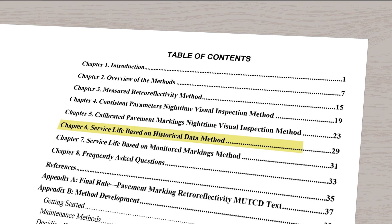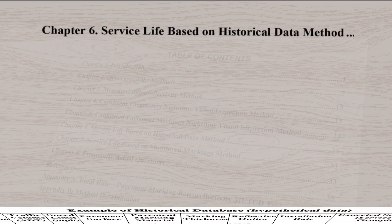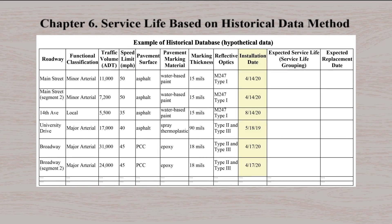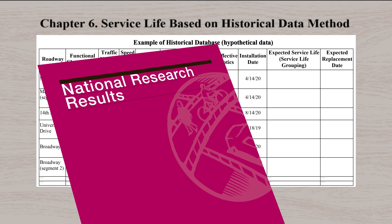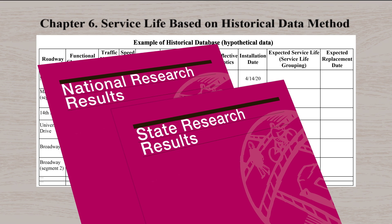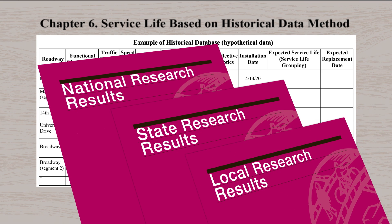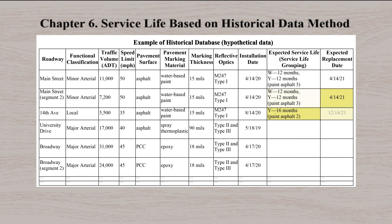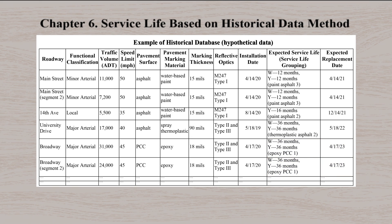There are also two methods based on service life of pavement markings. In the historic data method, the agency documents pavement marking installation dates and other data to track the location and type of markings installed. Then, using historical data or research results for the marking parameters and degradation conditions, the agency develops a schedule to replace markings. The schedule is set to prevent the pavement marking retroreflectivity from falling below the minimum level.